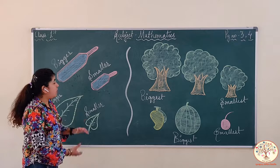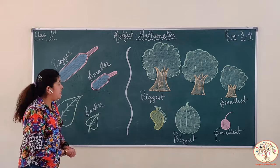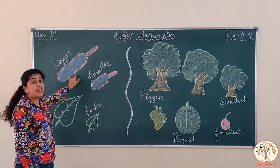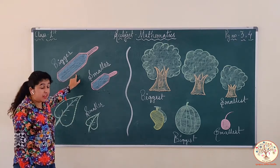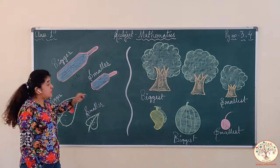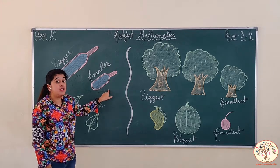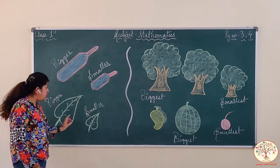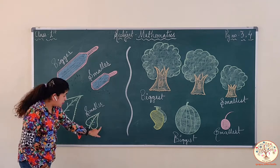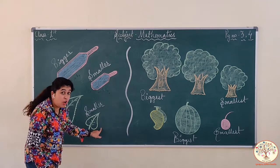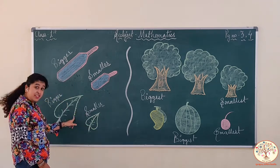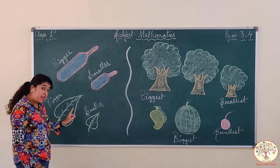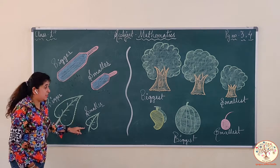Okay kids? Now let's revise. Which one is bigger? This one is bigger. And which one is smaller? This one is smaller. In the leaf, which one is smaller? This one is smaller than this. And which one is bigger? This one is bigger than this.